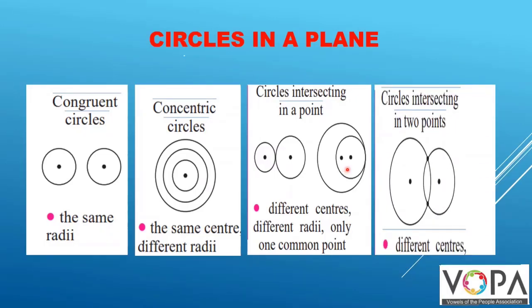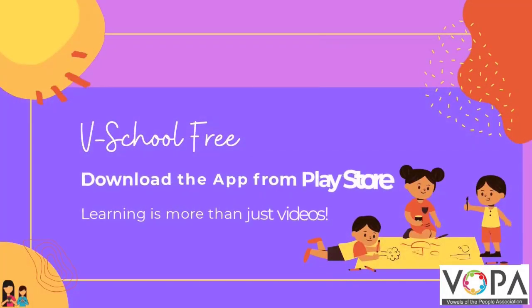Circles intersecting in two points. You can see the two different points where they are touching each other. They have different centers but they touch each other at two different points.